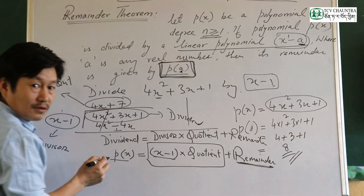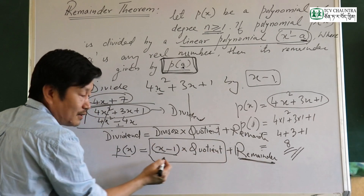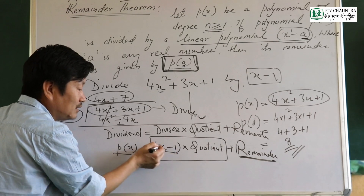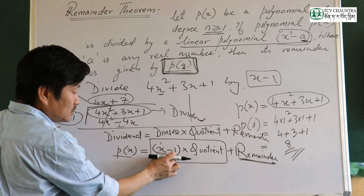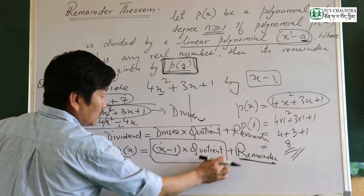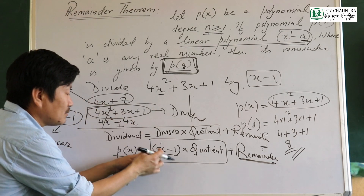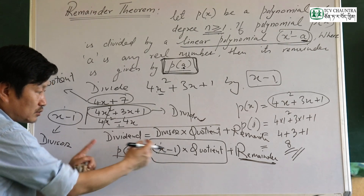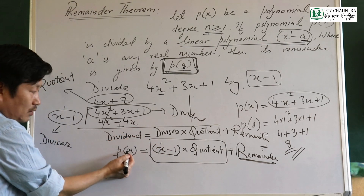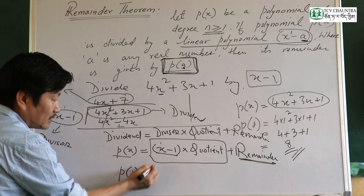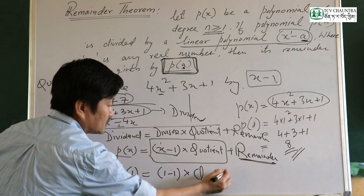We can write p of x as x minus 1 times q of x plus remainder r. Since the divisor is x minus 1, if we put x equals 1, we get p of 1 equals 1 minus 1 times q of 1 plus r, which is 0 times q of 1 plus r.